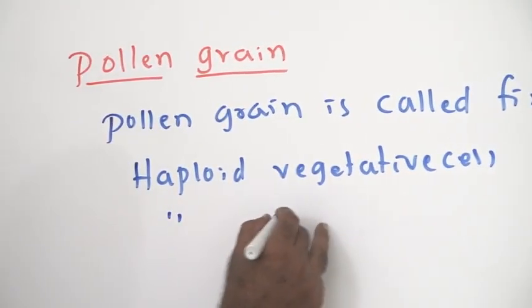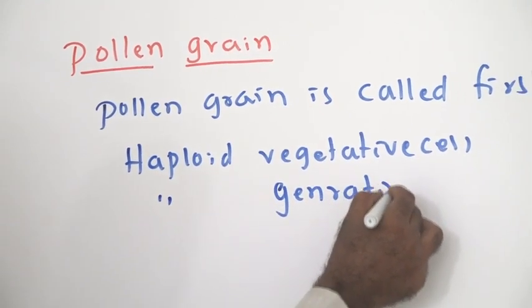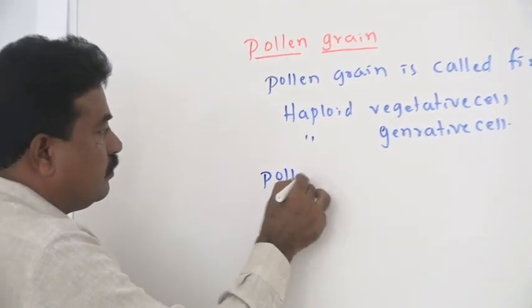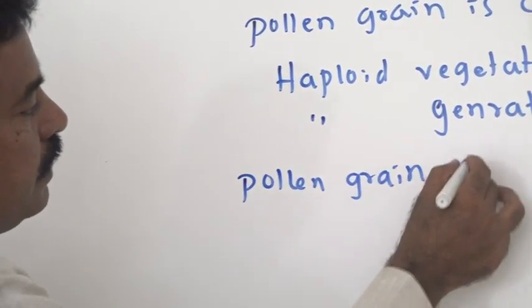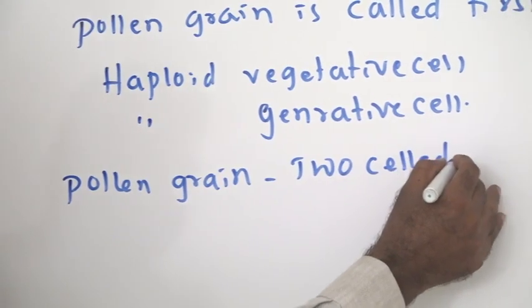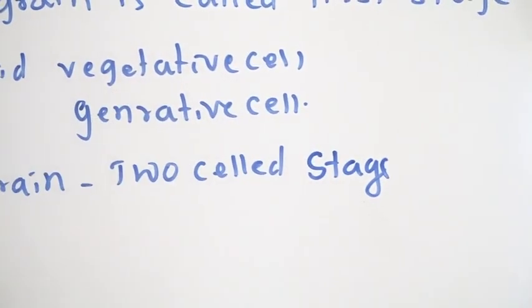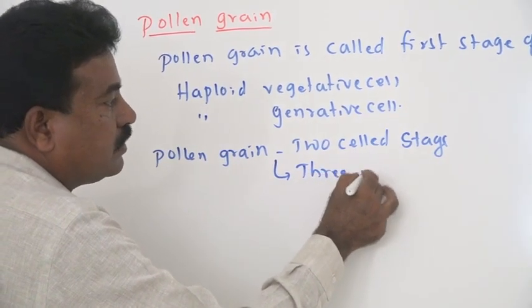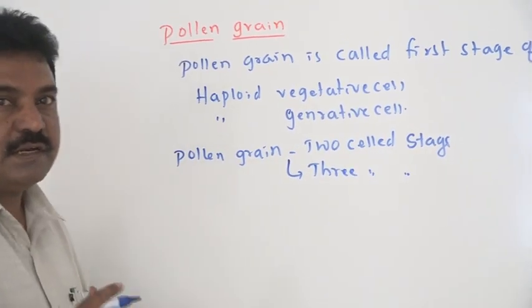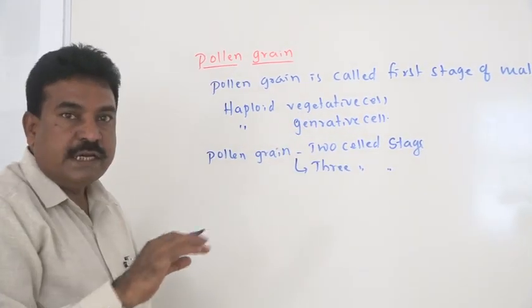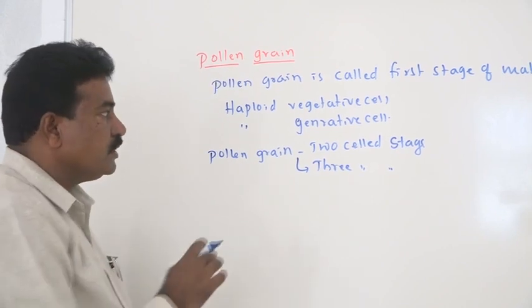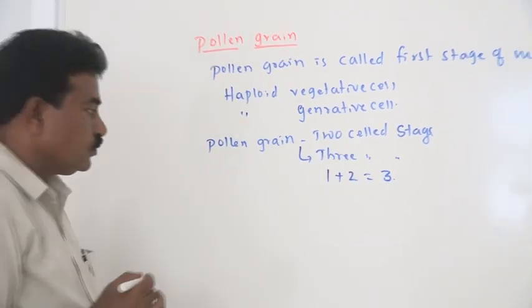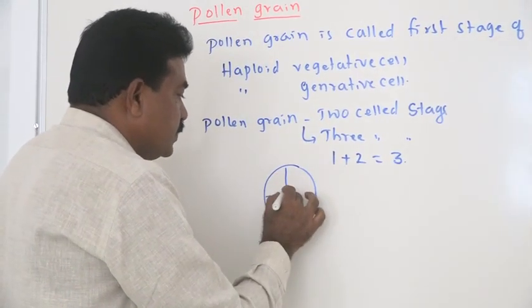In most of the plants, the pollen grain shed in two cell stages - that is generative cell and vegetative cell. Sometimes it may shed off in three cell stage. At that time, one vegetative cell is there and generative cell developed as two sperms. Hence the one vegetative cell plus two sperms together form three cells.